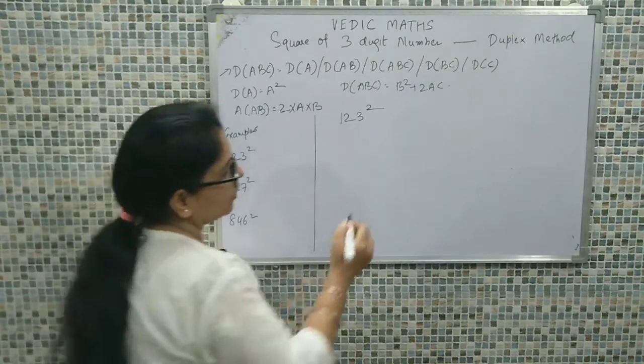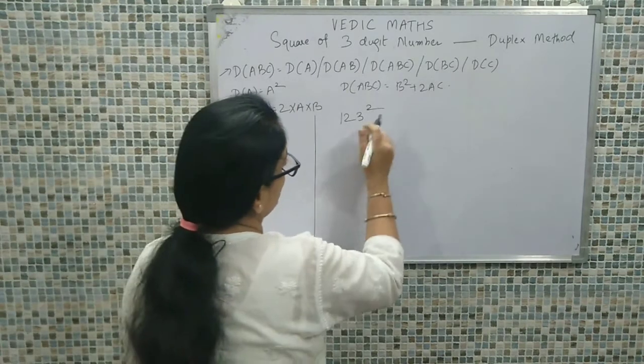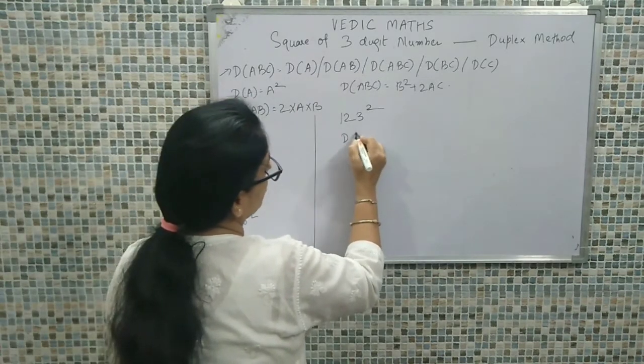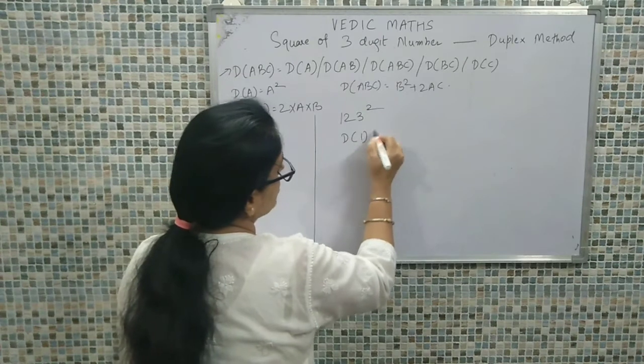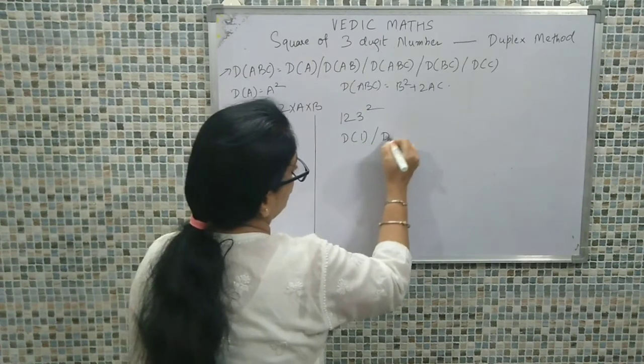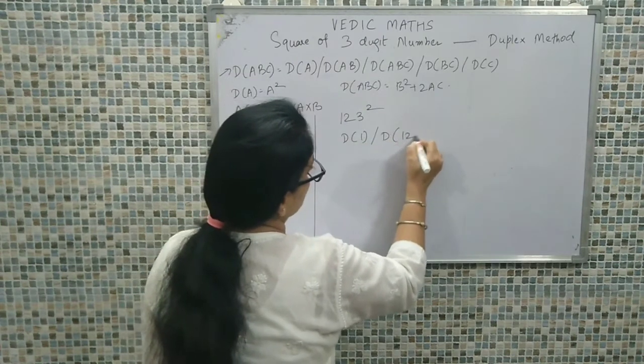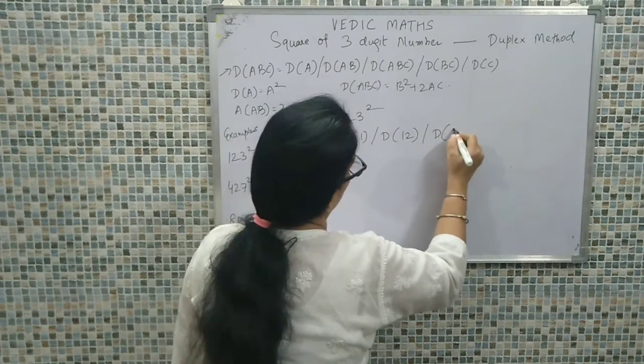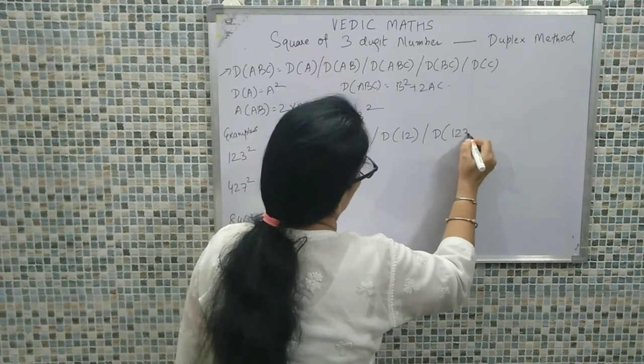Calculating the square of 123, we apply what we have learned: duplex of 1, then duplex of 1-2, then duplex of 1-2-3. We have now reached the last digit.